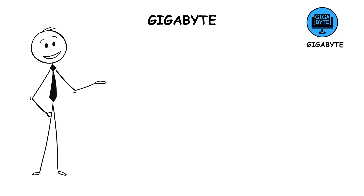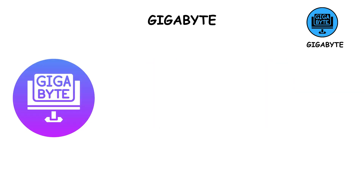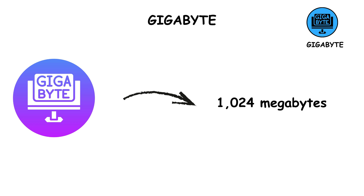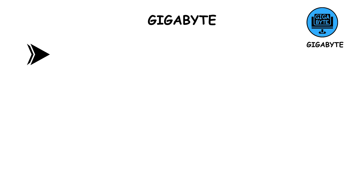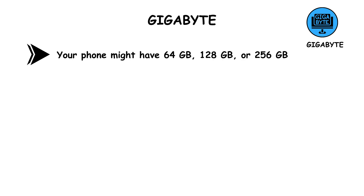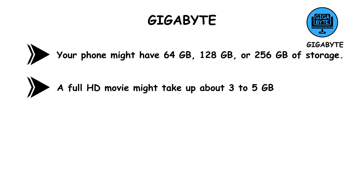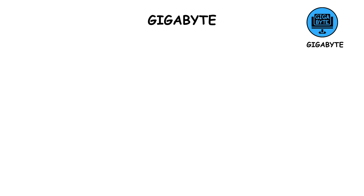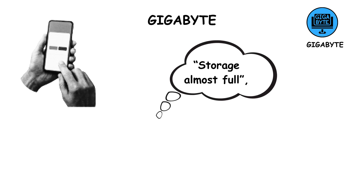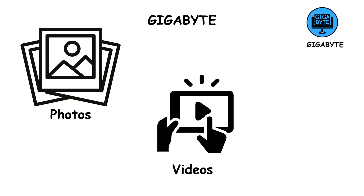Now comes the gigabyte, a term you probably see daily. A gigabyte equals 1,024 megabytes, or about 1 billion bytes. Most modern devices measure storage in gigabytes. For instance, your phone might have 64 gigabytes, 128 gigabytes, or 256 gigabytes of storage. A full HD movie might take up about 3 to 5 gigabytes. Around 250 songs, or 500 photos, could fit into a single gigabyte. So when you see your phone saying 'storage almost full,' it's because you've packed it with gigabytes of photos, videos, and apps.